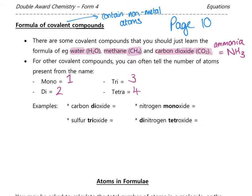For carbon dioxide: carbon has no prefix so we assume one, giving C. Then di-oxide — di means two — so there are two oxygens. The number is a subscript written in the bottom right-hand corner after the atom. So the formula of carbon dioxide is CO₂, because di-oxide literally means two oxygens.